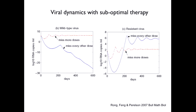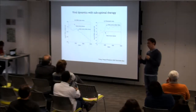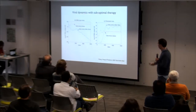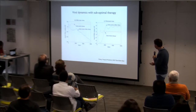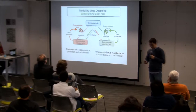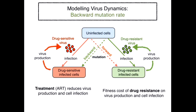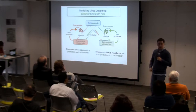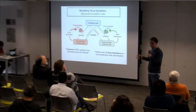People studied suboptimal therapy — what happens if patients skip doses or are not given the proper dose. Eventually we got into studying the role of the backward mutation rate, which is the mutation that happens in the opposite direction to what generates drug resistance — from a drug resistant strain mutating to a drug sensitive strain. In the problem of drug resistance you would expect that's not that important, but you'll see it provides a mechanism that might be relevant.